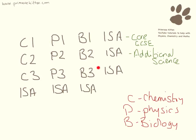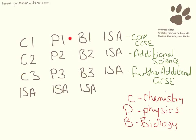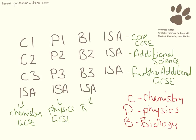Some of you may be doing even more units — C3, P3, B3 and another controlled assessment. That is your further additional. The other way that you can do it is by doing all of the chemistry in one lot, all of the physics in one lot and all of the biology in one lot. This will give you a chemistry GCSE, a physics GCSE, and a biology GCSE.